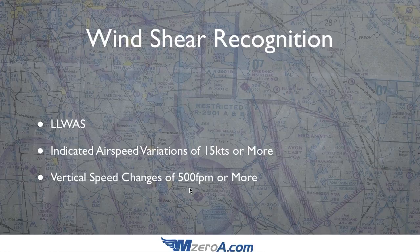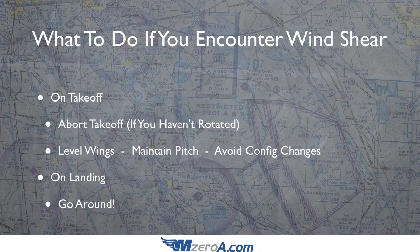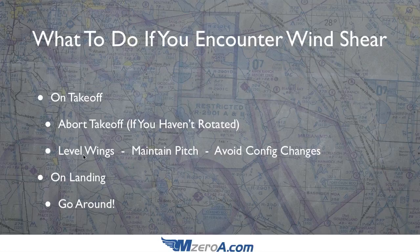How do we avoid wind shear if we encounter it? If you encounter wind shear on takeoff — and takeoff is probably one of the worst times to encounter it — hopefully you've encountered it before you've rotated. If you haven't rotated, that's simple: just abort the takeoff. However, if we encounter it like in that picture during the initial climb out, the first thing you need to do is level your wings. This helps increase your climb gradient. Any bit of turn takes away from your horizontal component of lift, and you're already losing lift because of that tailwind. Maintain your same pitch and avoid any configuration changes — if you took off with 10 degrees of flaps, leave those flaps in until you're out of the wind shear.